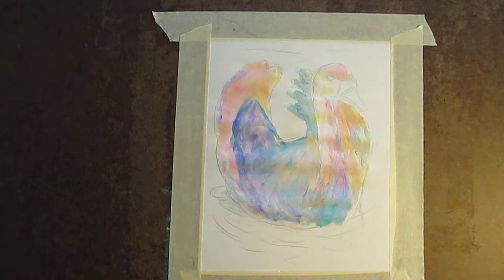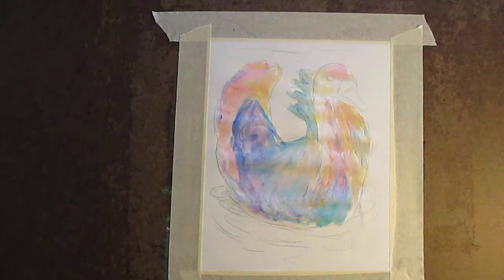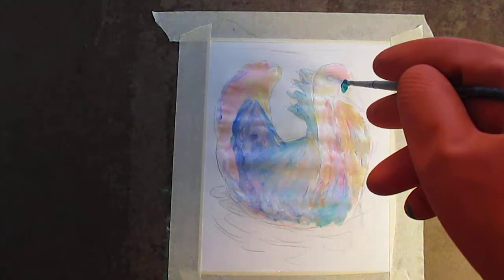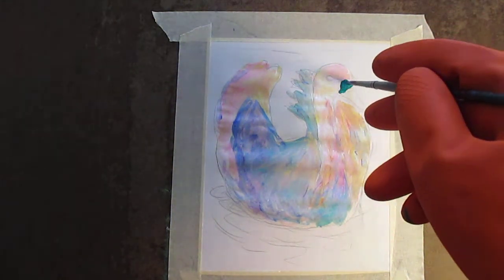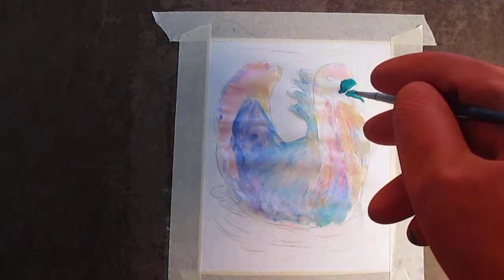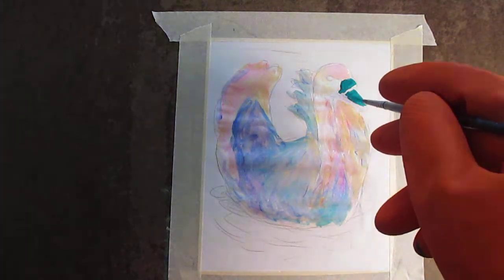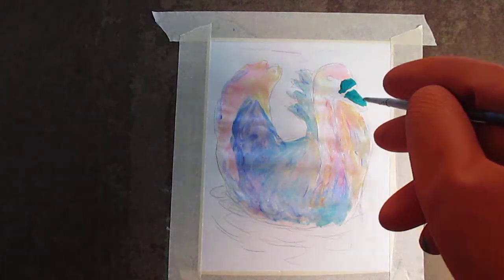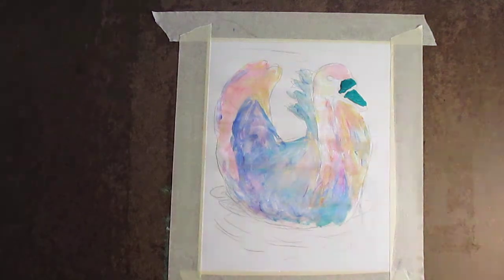I'm going to real quick put in the dark area where the swan has the beak area. That's going to make a big difference because that's so far the only place I have any really dark values. That's what we call the light dark areas, values.